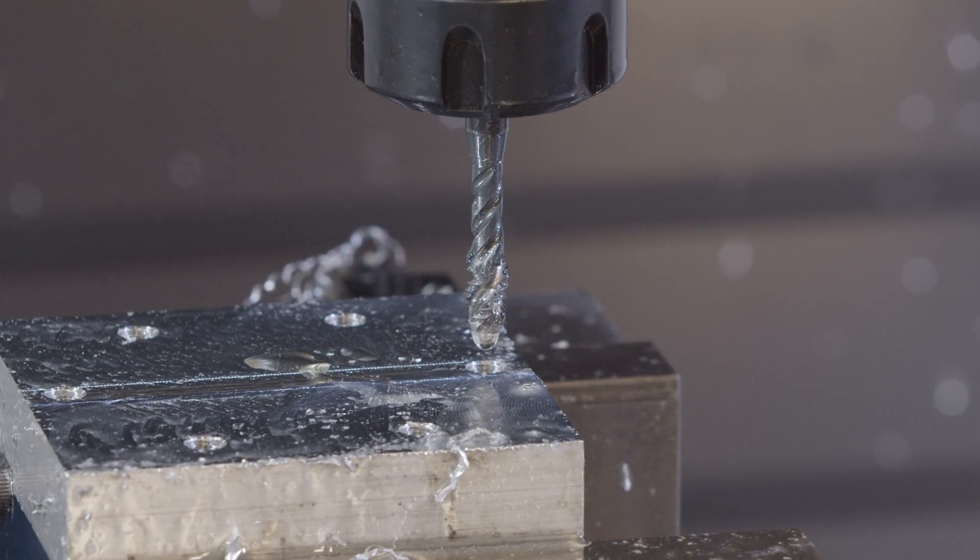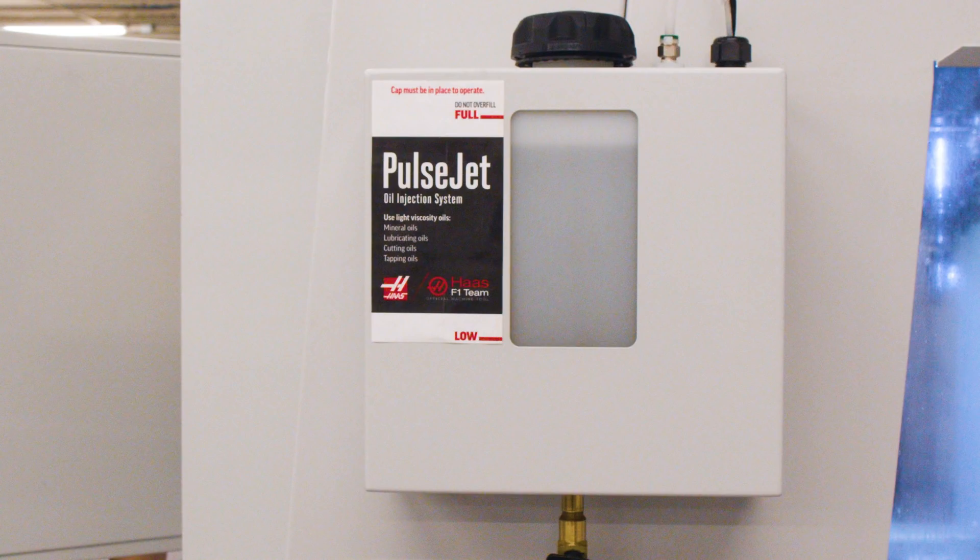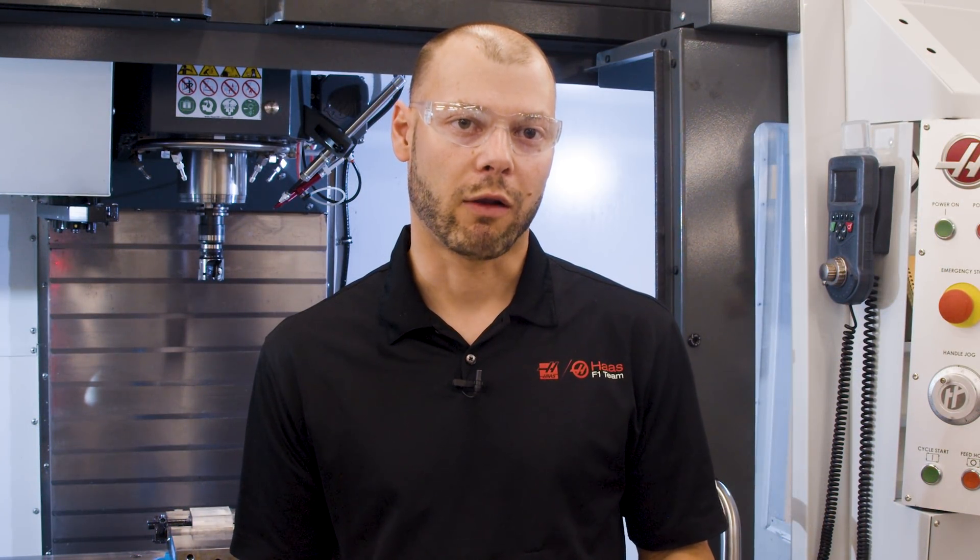The PulseJet system has an independent oil reservoir that you fill with a low-viscosity tapping or cutting oil. The oil is pressurized with compressed air and controlled by a solenoid, allowing for precisely timed delivery of oil to the tool.